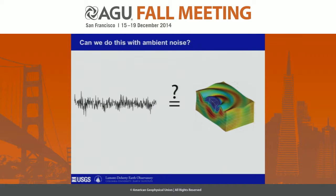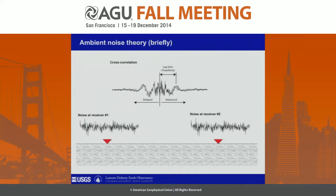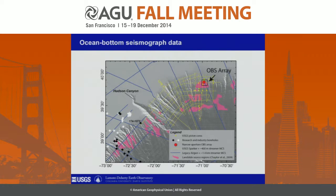Our question is: can we do this with ambient noise? Can we use surface waves — interface waves that are excited by background noise — to constrain shear wave velocity? The idea of ambient noise is that if you record a random noise field at two different receivers, the cross-correlation of that random noise field should be maximized at a lag time that corresponds to the travel time of the surface wave between those two instruments. We set out to test this idea to see if we can actually do this at high enough frequencies — and therefore high enough resolution — to give us a constraint on shear wave velocity in sediments that are prone to failure.